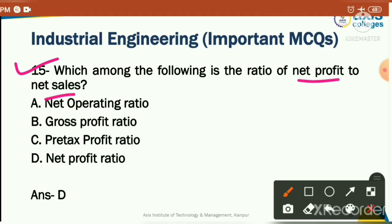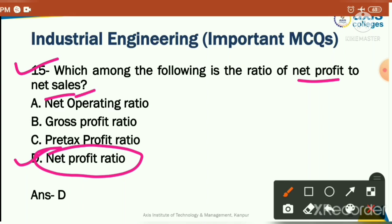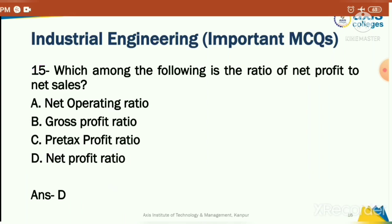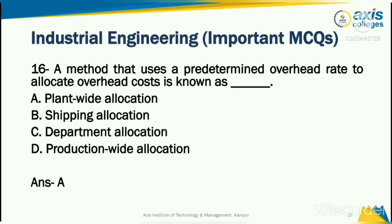Which among the following is the ratio of net profit to net sales? The correct answer is the net profit ratio. It is defined as the ratio of net profit to net sales.